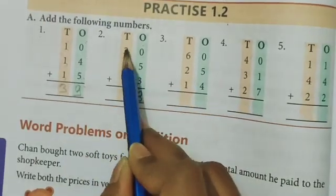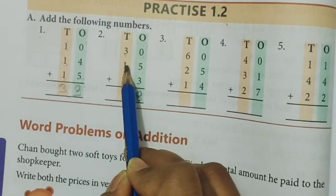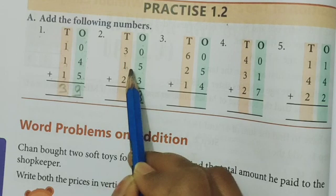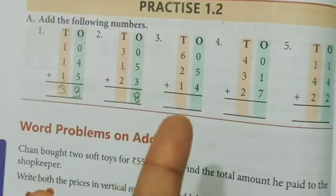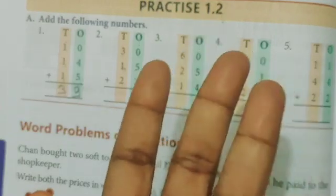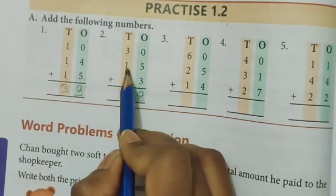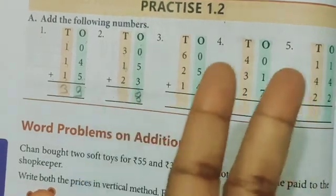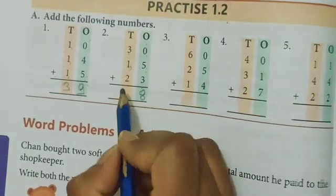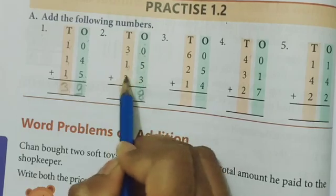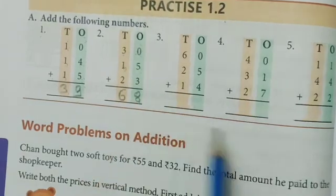Now see 3 plus 1, first these two numbers we will add. 3 plus 1, 4. And 4 plus 2, 6. That means answer is 6. That means 30 plus 15 plus 23 equals to 68.